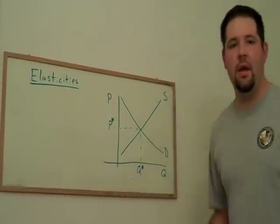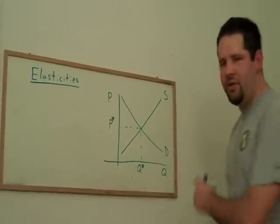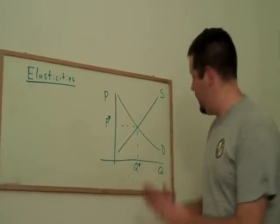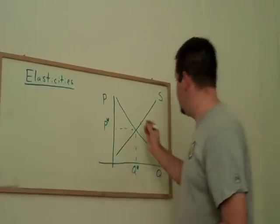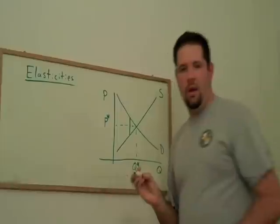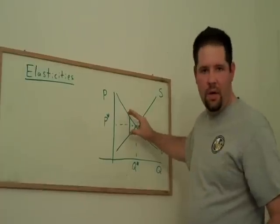And the next thing that we asked was, what happens if we impose a tax on this market? And I told you, don't go shifting curves, that just makes it more complicated. Just put in a tax wedge. And so one way to do this is to put in just a wedge between the supply and demand, the height of the per unit tax.